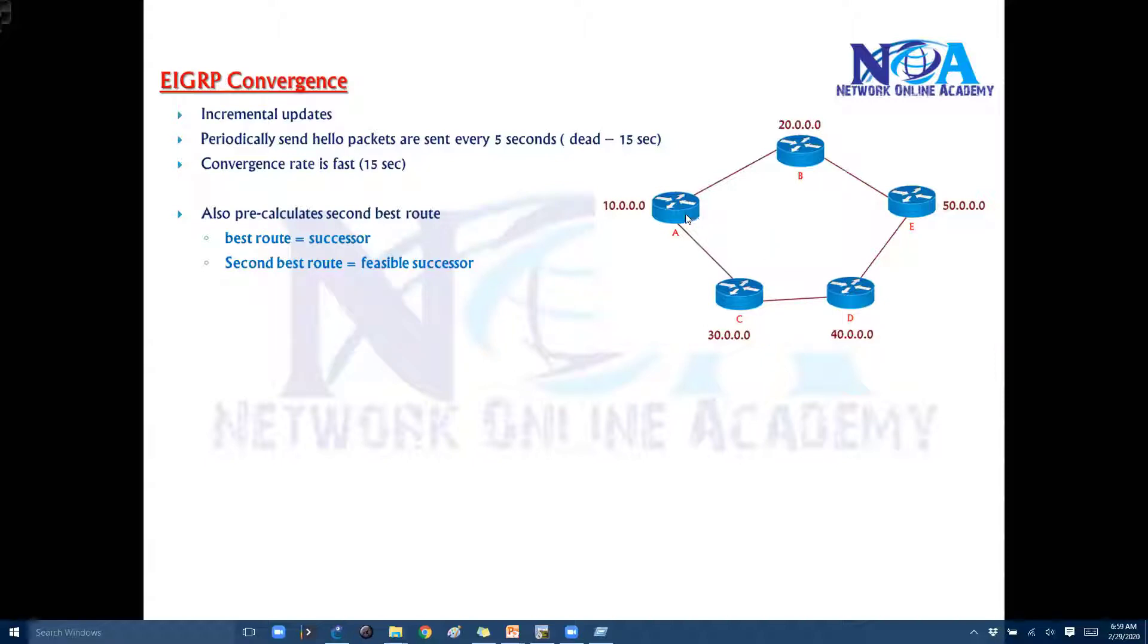Like in this example, let's assume that A is my router and 50 is my destination. To reach this 50 dot network there are multiple possible routes. So we can go via A, B,